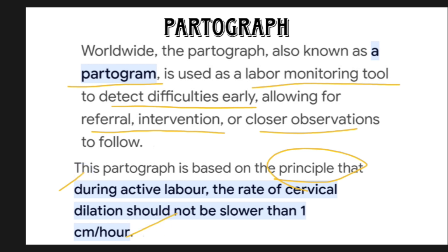During active labor, when the labor is going on, the rate of cervical dilation should not be less than 1 centimeter per hour. It should not be reduced to less than 1 centimeter. That is the main principle of partogram. If it reduces to less than 1 centimeter, then absolutely the delivery is going to be an abnormal delivery. It should undergo C-section.